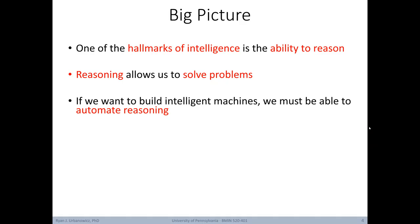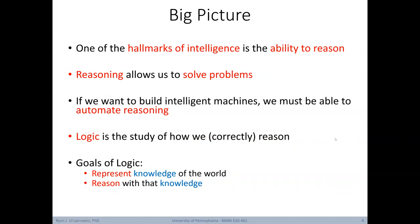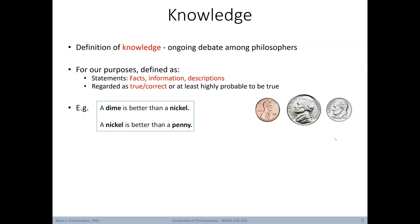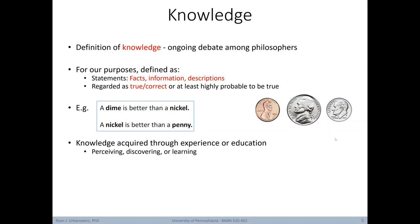First we'll discuss fundamental concepts in AI. One of the hallmarks of intelligence is the ability to reason. Reasoning allows us to solve problems. If we want to build intelligent machines, we must be able to automate reasoning. Logic is the study of how we correctly reason. The goals of logic are to represent knowledge of the world and to reason with that knowledge. Knowledge can be defined as statements like facts, information, and descriptions that are regarded as true or correct, or at least highly probable. Examples include: a dime is better than a nickel, and a nickel is better than a penny. Knowledge is acquired through experience or education — it requires perceiving, discovering, and learning.